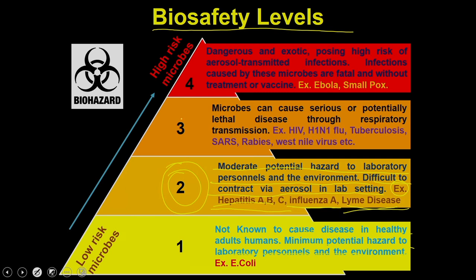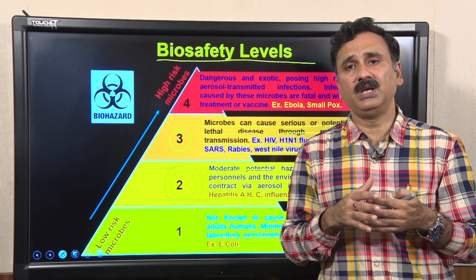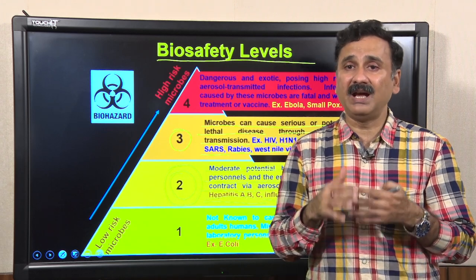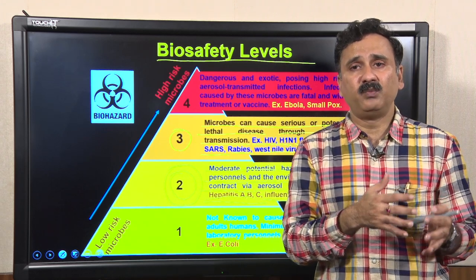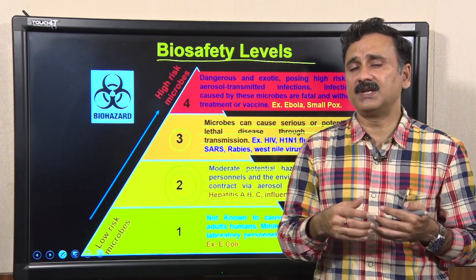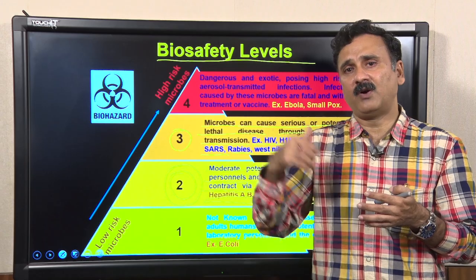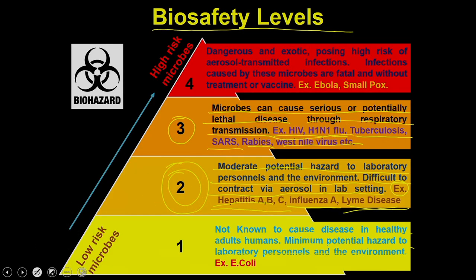BSL 3 organisms can cause serious or potentially lethal diseases through respiratory transmission. Examples include HIV, H1N1 flu, tuberculosis, SARS, rabies, and West Nile virus. BSL 3 organisms can cause very serious or life-threatening diseases and also spread through aerosol, making them very infectious. You must protect yourself using appropriate biosafety cabinets and other equipment.